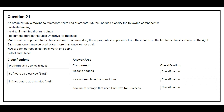On the left side you have the classification, on the right side you have the component and you need to choose the correct classification. The first component is web hosting. The correct classification is Platform as a Service.